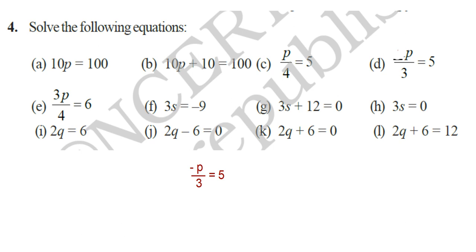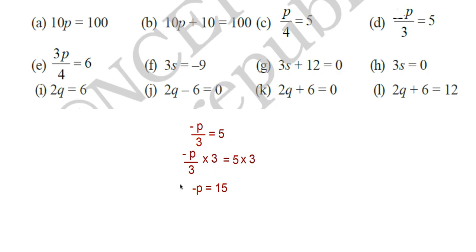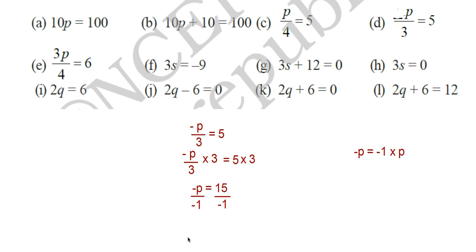Look at question number D: negative p by 3 is equal to 5. To get p, in the first step we multiply 3 on both sides. So: minus p by 3 into 3 is equal to 5 into 3. The 3s cancel, so minus p is equal to 15. But you want to get the value of p. Minus p means minus 1 into p, so divide both sides by negative 1. That is: negative p by negative 1 is equal to 15 by negative 1. Same sign cancels, so you get p is equal to negative 15.